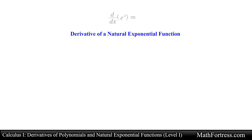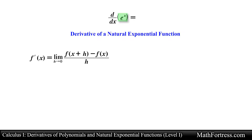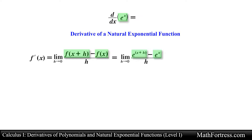The next derivative rule is the derivative of a natural exponential function. Let's compute the derivative of f(x) equals e raised to the power of x using the definition of the derivative: f prime of x equals the limit as h approaches 0 of f(x+h) minus f(x) over h. Substituting the natural exponential function and applying properties of exponents, we rewrite the expression as e raised to the power of x times e raised to the power of h.